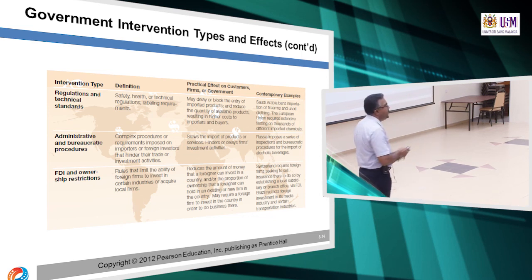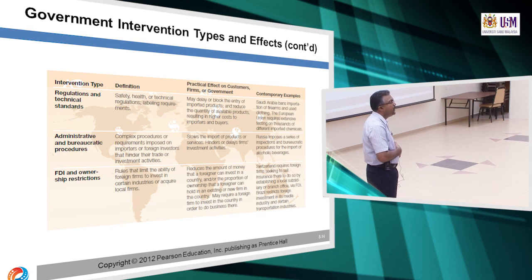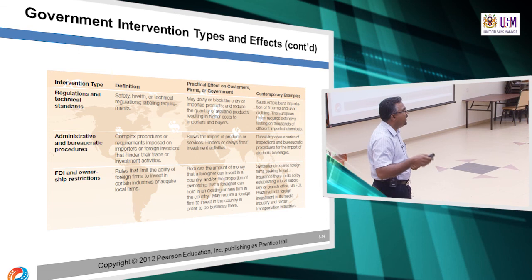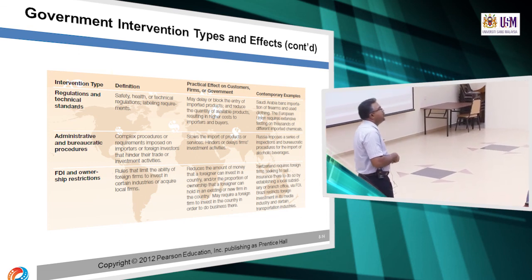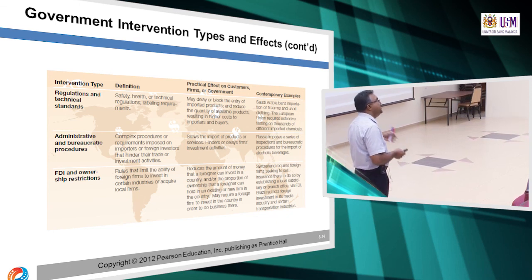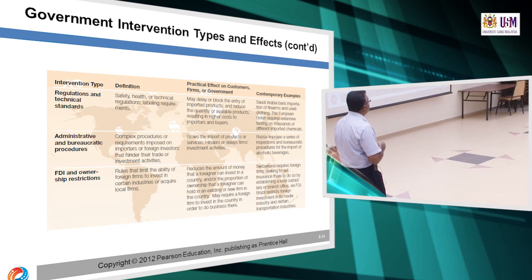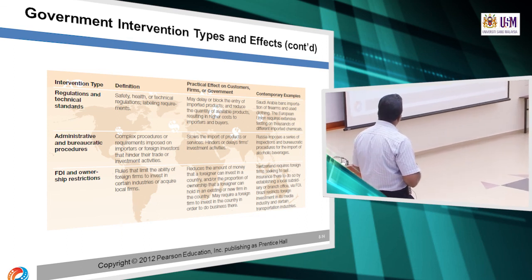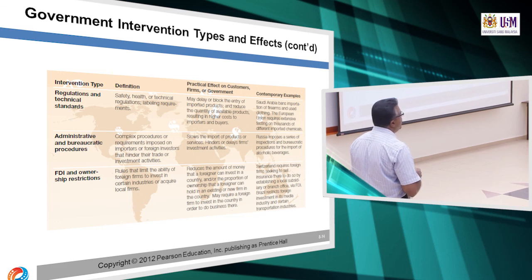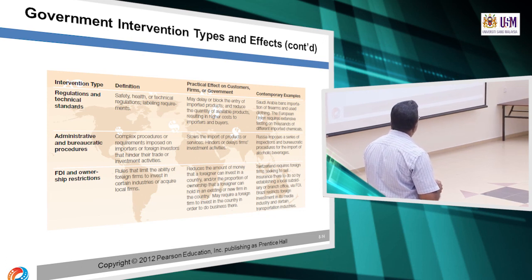Products that never go through stringent checks can cause problems — contaminated creams or mineral water with quality issues. European Union is very, very strict. Administrative and bureaucratic procedures can also act as a barrier. For example, Russia imposes a series of inspections and bureaucratic procedures for the import of alcoholic beverages — you have to fill a lot of forms and declarations to buy the product.